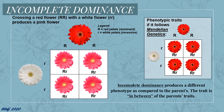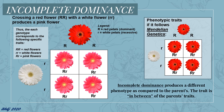This pattern of inheritance is called incomplete dominance, wherein a heterozygous genotype is expressed as a median trait between the parents. As shown here, we have the homozygous dominant genotype having red flowers, a homozygous recessive genotype with white flowers, and a heterozygous genotype representing pink flowers.